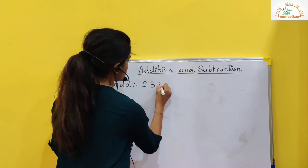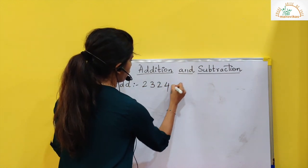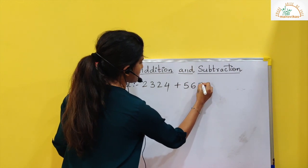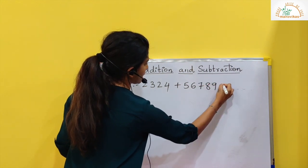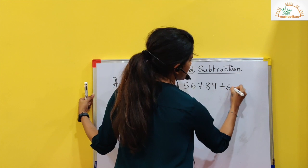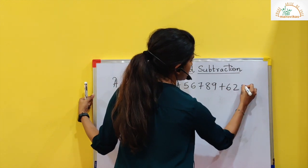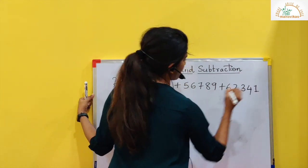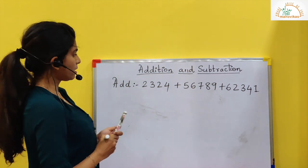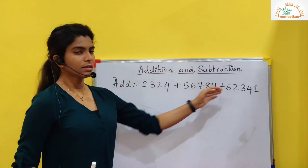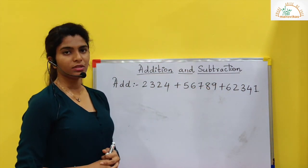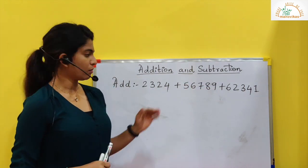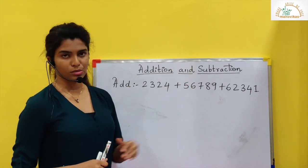1, 2, 3, 2, 3, 2, 4 plus 5, 6, 7, 8, 9 plus 6, 3, 2, 3, 4, 1. Now here there are 3 different numbers. We have to add 3 different numbers here which are large numbers.